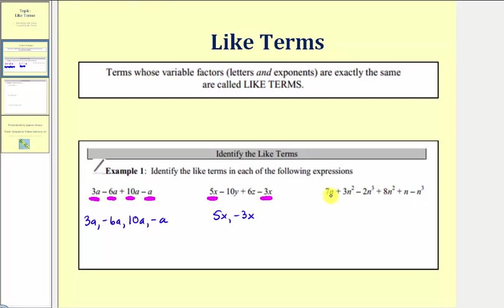Our last expression is 7n plus 3n squared minus 2n cubed plus 8n squared, plus n minus n cubed. Looking at the first term 7n, it has exactly one factor of n. The only other term that has exactly one factor of n is the term n. The second term 3n squared has two factors of n, and the only other term with exactly two factors of n is 8n squared. The third term negative 2n cubed has exactly three factors of n, and the last term negative n cubed is the only other term with exactly three factors of n.